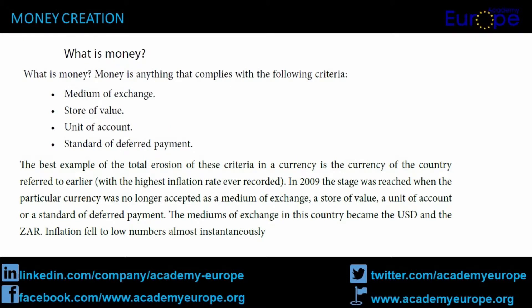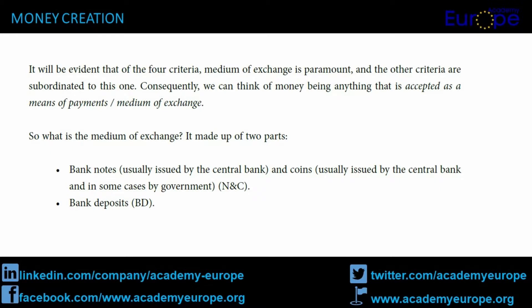What is money? Money is anything that complies with the following criteria: medium of exchange, store of value, unit of account, standard of deferred payment. The best example of the total erosion of these criteria in a currency is the currency of the country referred to earlier, with the highest inflation rate ever recorded. In 2009 the stage was reached when the particular currency was no longer accepted as a medium of exchange, a store of value, a unit of account, or a standard of deferred payment. The mediums of exchange in this country became the USD and the rand. Inflation fell to low numbers almost instantaneously. It will be evident that of the four criteria, medium of exchange is paramount, and the other criteria are subordinated to this one.